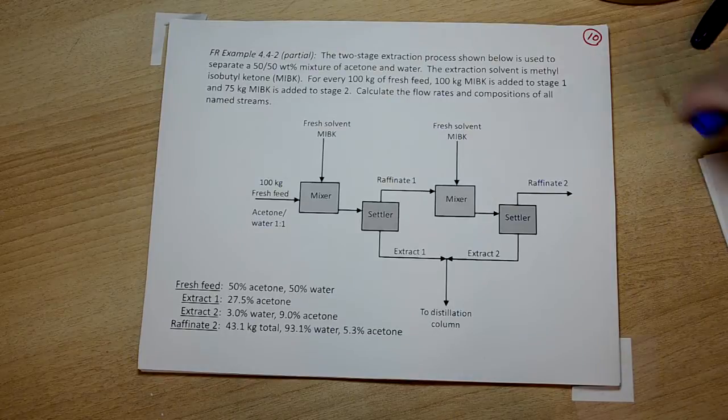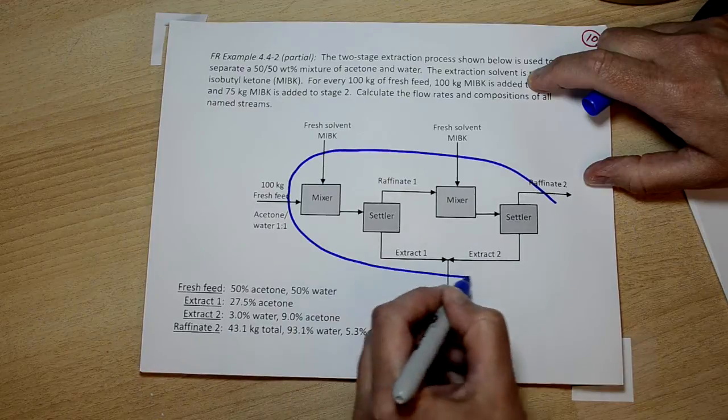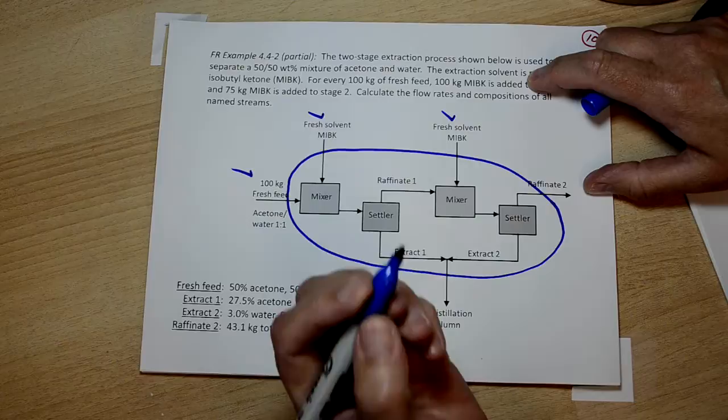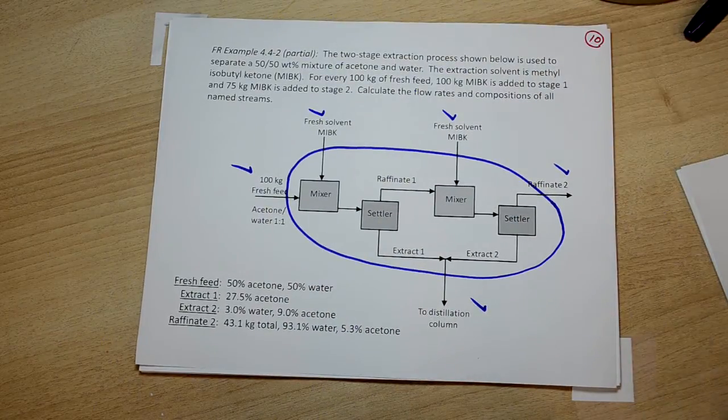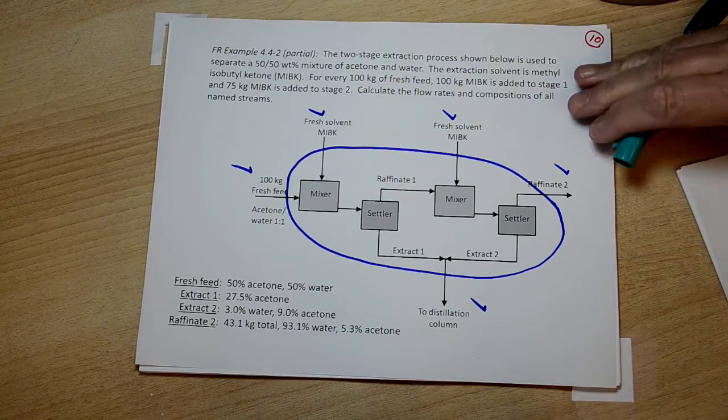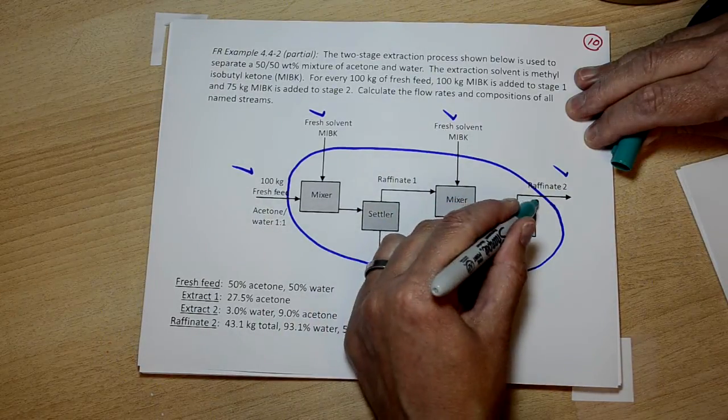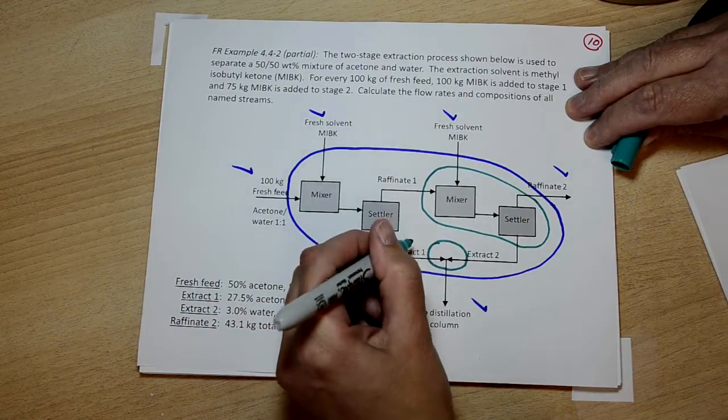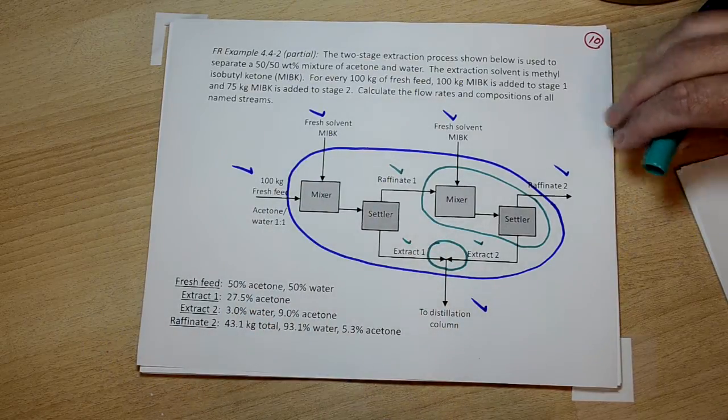In part one of this problem, we did an overall balance, and we knew these streams, and we were able to get the rest of these streams that were part of the overall balance of the system. In part two, we did the mixing point balance and a balance on stage two, and that gave us all of the internal streams in this part of the system.